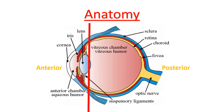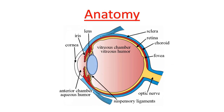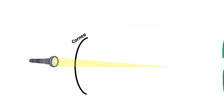The posterior segment includes the vitreous, retina, choroid, and the outer white shell called the sclera. Here we are discussing cataract, so we are particularly interested in analyzing the lens. As you can see, the lens is located directly behind the iris. Here you have a simplified design.